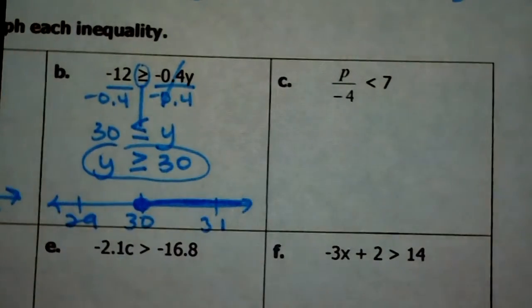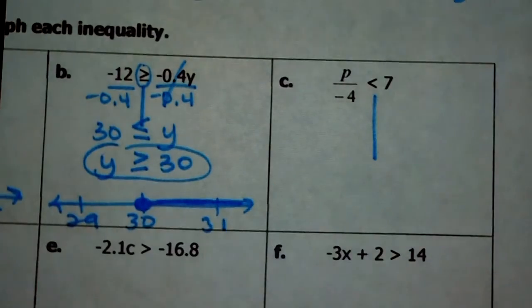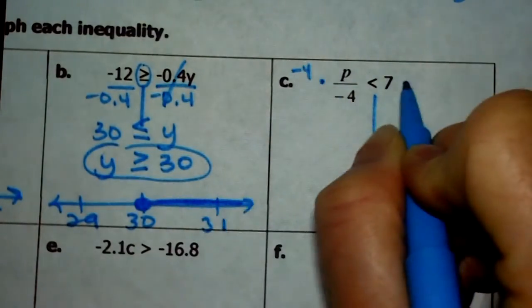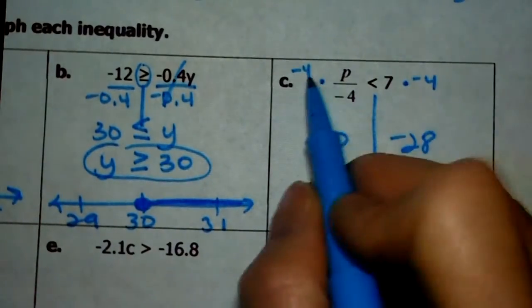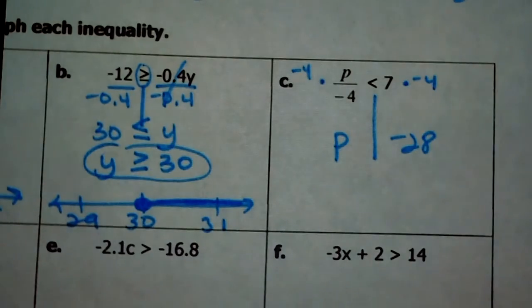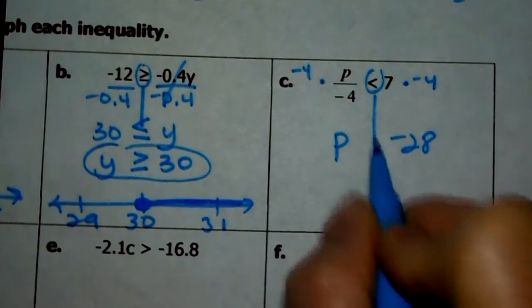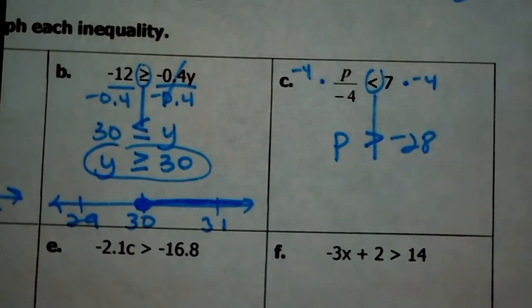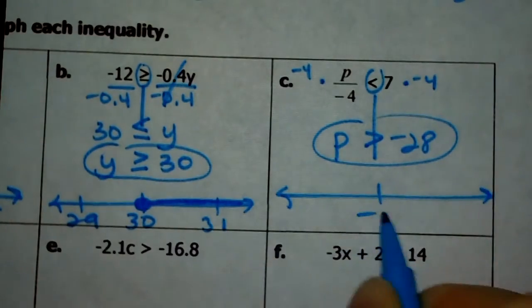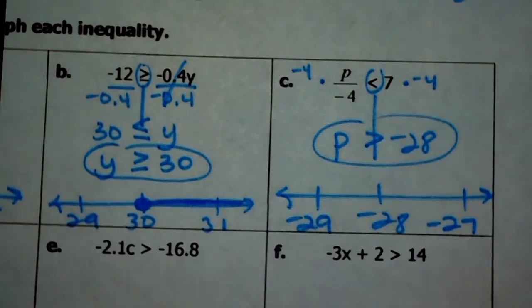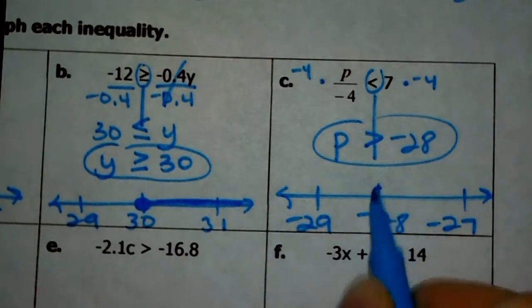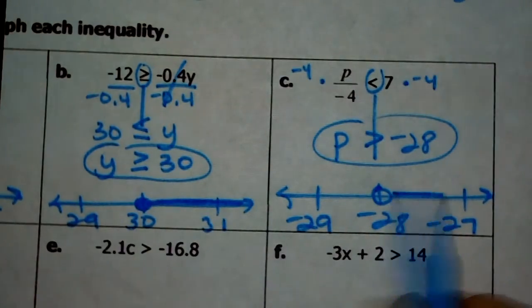Next one: p is being divided by negative 4. To undo that, I need to multiply by negative 4. P is left, and 7 times negative 4 is negative 28. Because I just multiplied both sides by a negative, I need to flip the sign — it was pointing at the p, now it opens up to the p. I put negative 28 in the center, negative 29 to the left, negative 27 to the right. If p is greater than negative 28, that means open because it can't be negative 28, and greater values shade to the right.